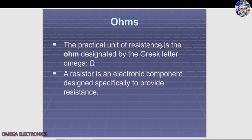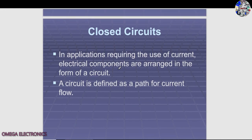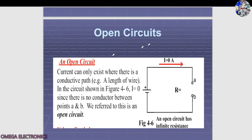A resistor is an electronic component designed specifically to provide resistance, and resistance also plays an important role in a circuit. Current flows in a closed circuit — it does not flow in an open circuit. In applications requiring the use of current, electrical components are arranged in the form of a circuit, which is a closed path for current flow. Current can only exist where there is a conductive, closed path.